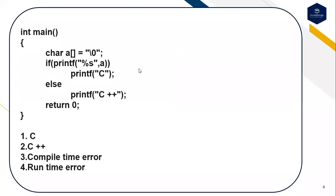This is the third question: int a = NULL, and if(printf("%s", a)) print 'C', else print 'C++'. The options are: first option C, second option C++, third option compile time error, fourth option runtime error.